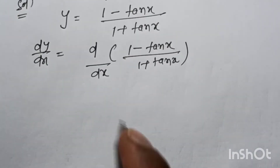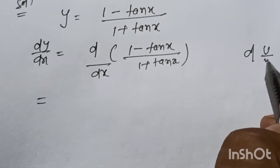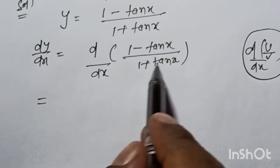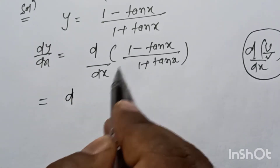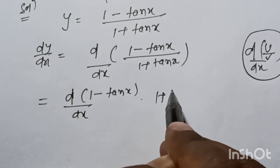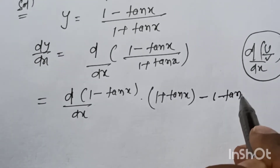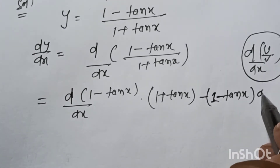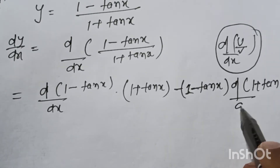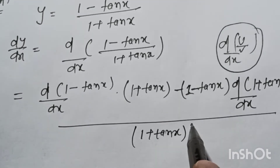We apply the derivative of a division — the quotient rule formula. So dy by dx equals: d(1 minus tan x)/dx times (1 plus tan x), minus (1 minus tan x) times d(1 plus tan x)/dx, all divided by (1 plus tan x) to the power 2.